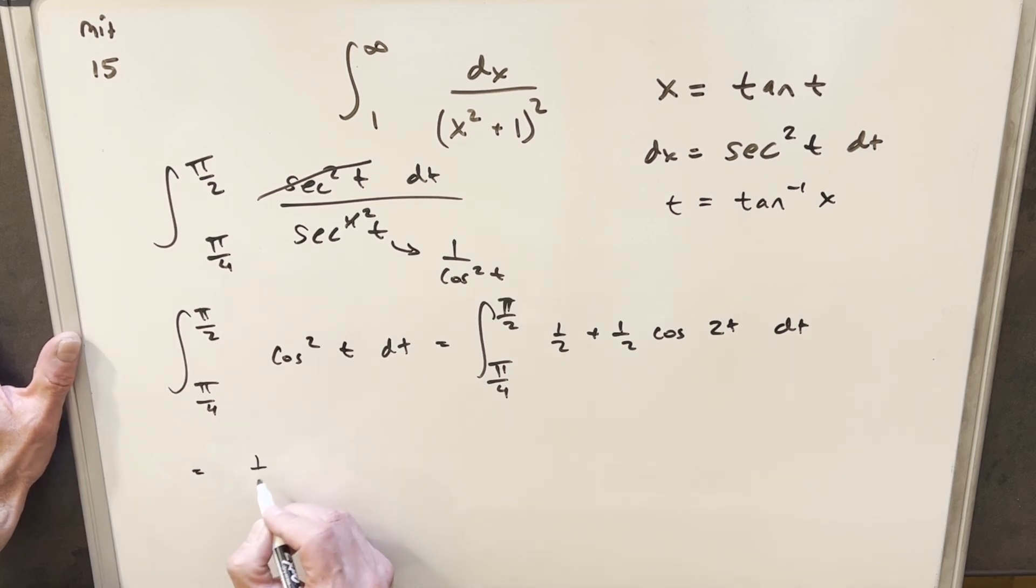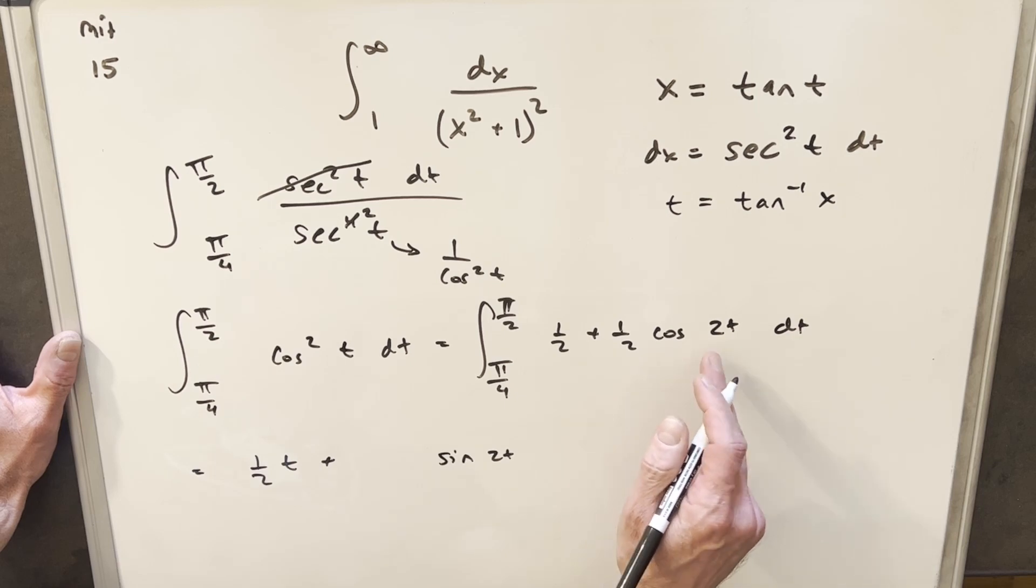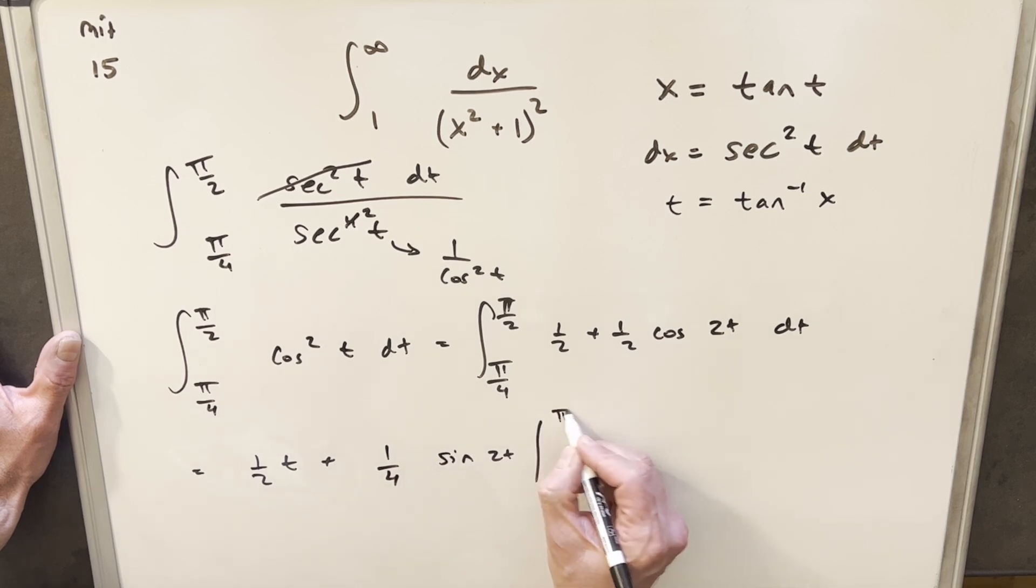The integral of 1/2 is going to be (1/2)t. The integral of cos(2t) is going to be sin(2t). But we need to bring a 2 out in the denominator. We already have a half, so it's 1/2 times 1/2, which is 1/4. And we're evaluating this from π/4 to π/2.